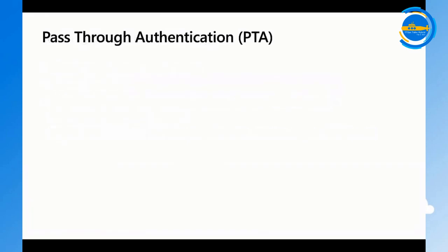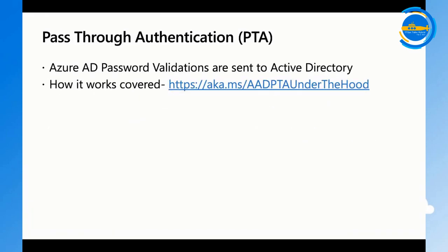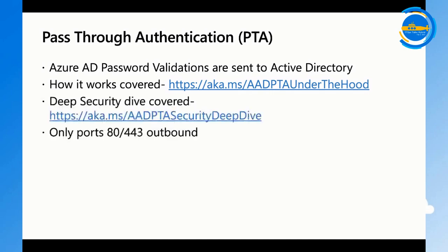Pass-through authentication works by taking user credentials entered in Azure AD and validating them directly against on-premises Active Directory domain controllers. Full documentation covers how this works under the hood. You only need ports 80 and 443 outbound for connectivity.